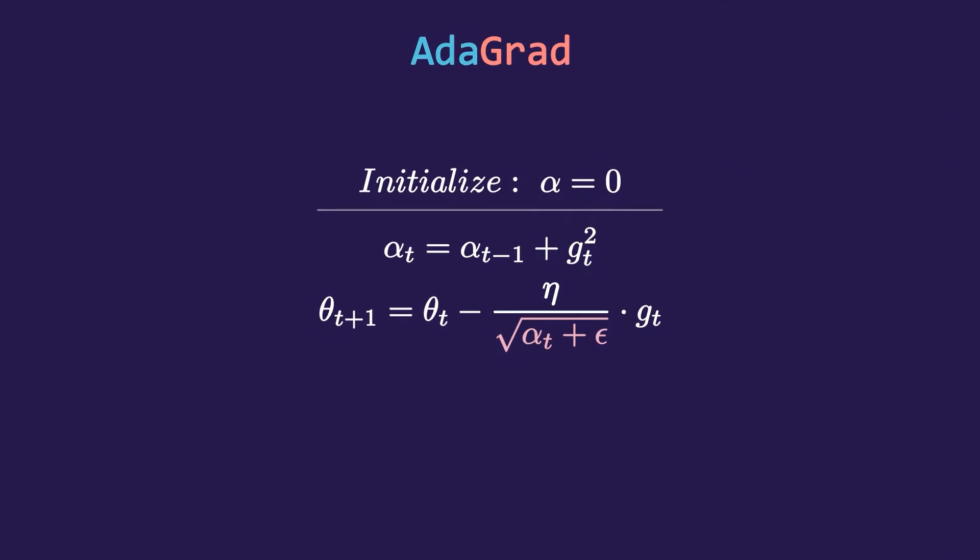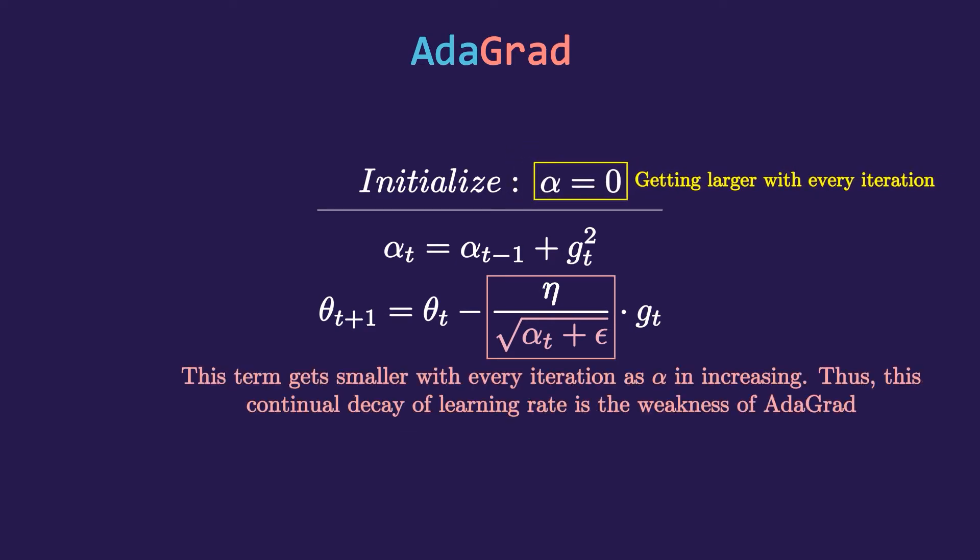But it still has some weaknesses, because in every iteration we are adding square of gradients in alpha. So with every iteration, alpha is increasing, and then if we divide this increasing alpha with learning rate, this term becomes very very small. Time comes when this number becomes infinitely small and training stops. As you can see from these plots, the alpha is increasing with every iteration and the learning rate is decreasing. So this is quite problematic.